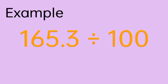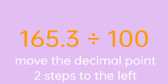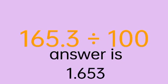Another example. Let us divide 165 and 3 tenths by 100. 100 has 2 zeros, so we will just move the decimal point two steps to the left — 1, 2. Our answer will be 1.653, or 1 and 653 thousandths.